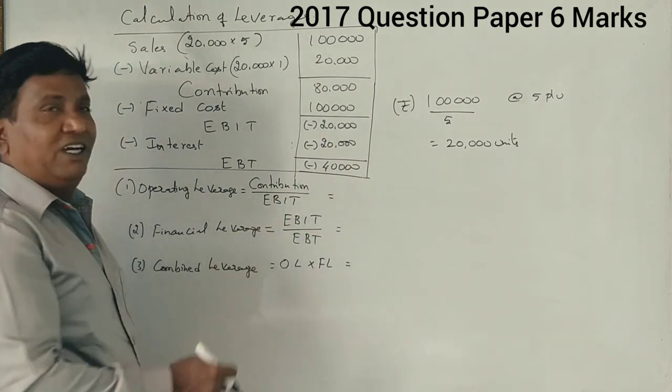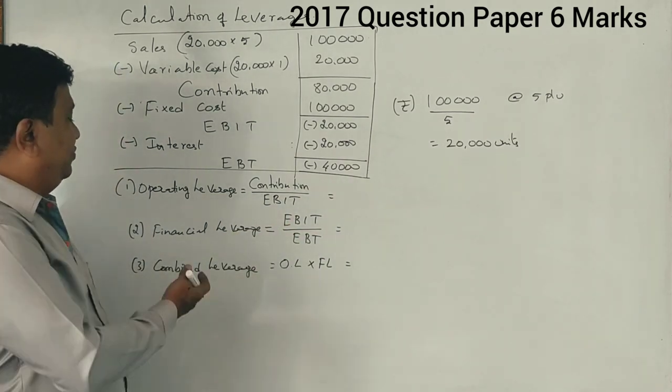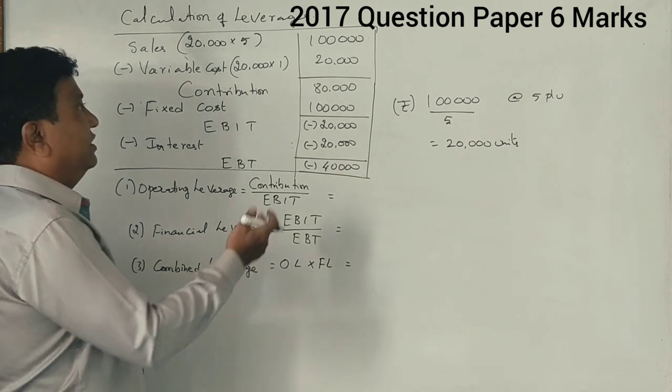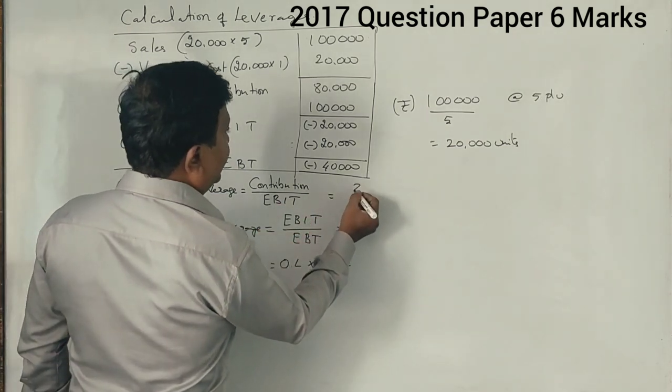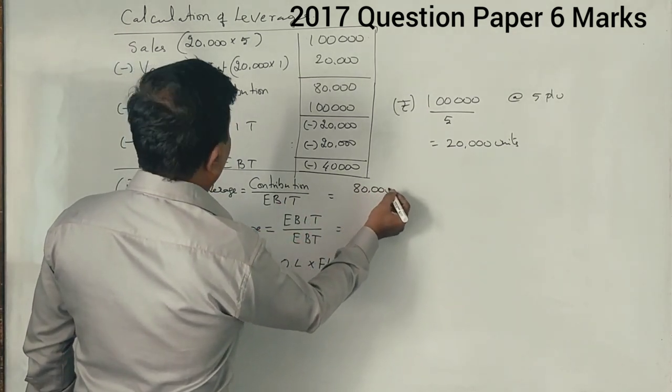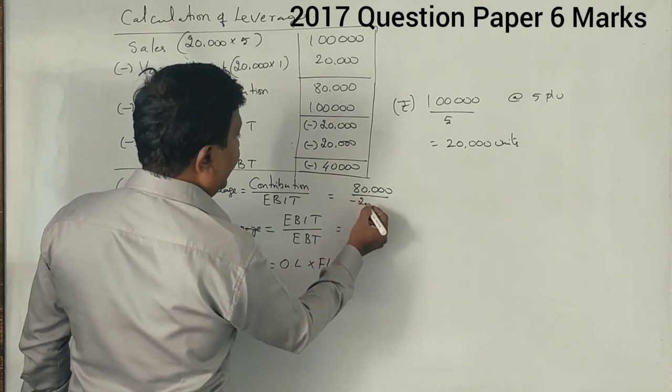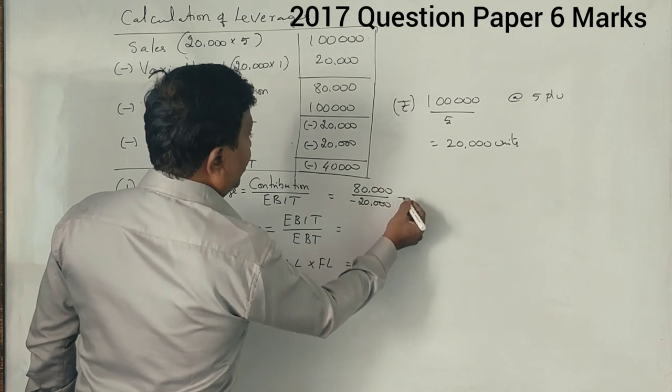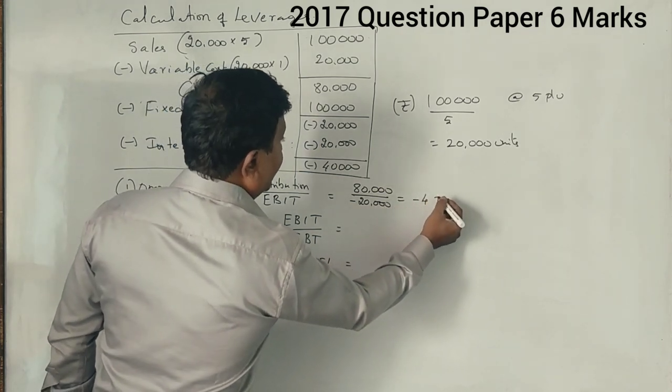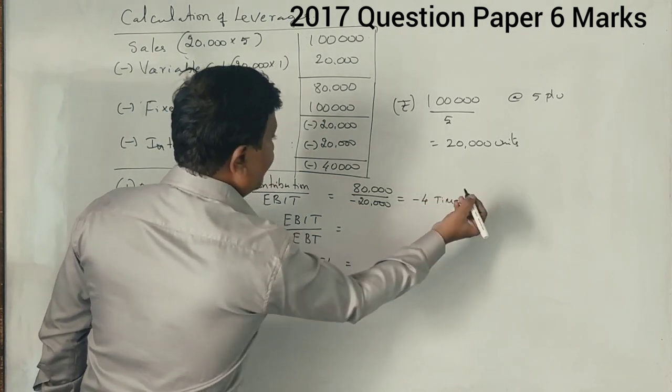Now how do you calculate the operating leverage and financial leverage in this? First we take contribution is 80,000, and EBIT is minus 20,000. And you get answer of minus 4 times. Got it?